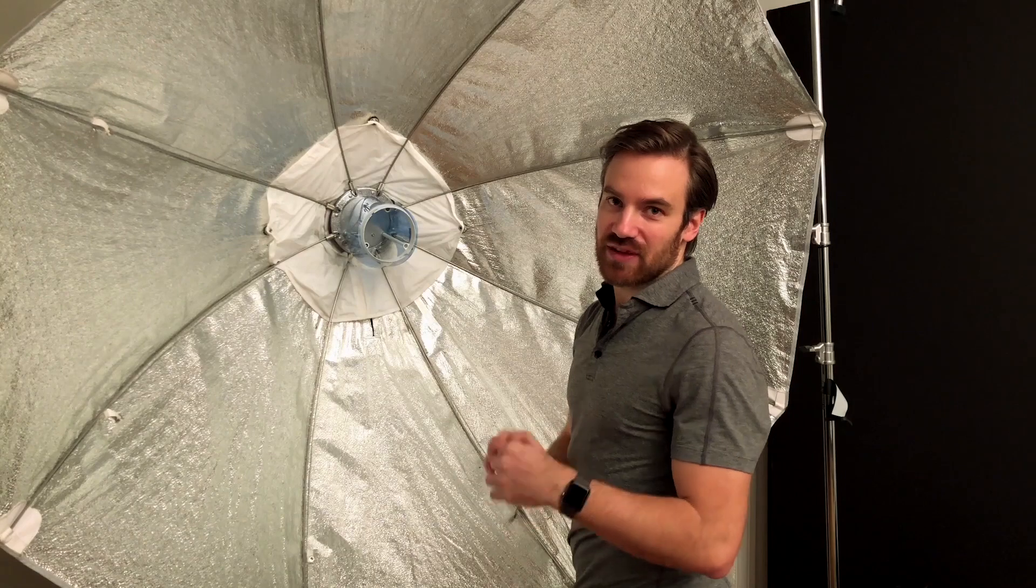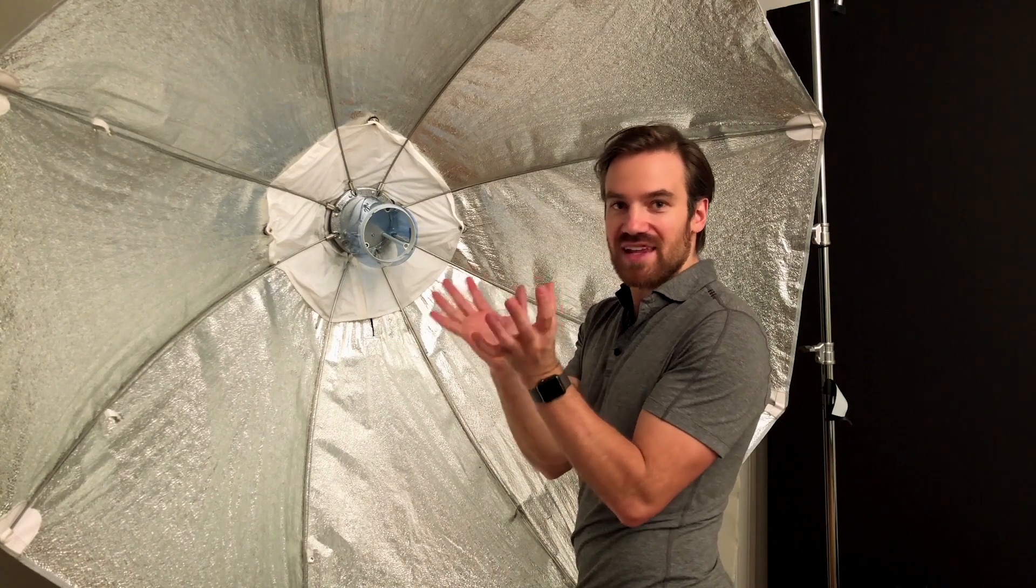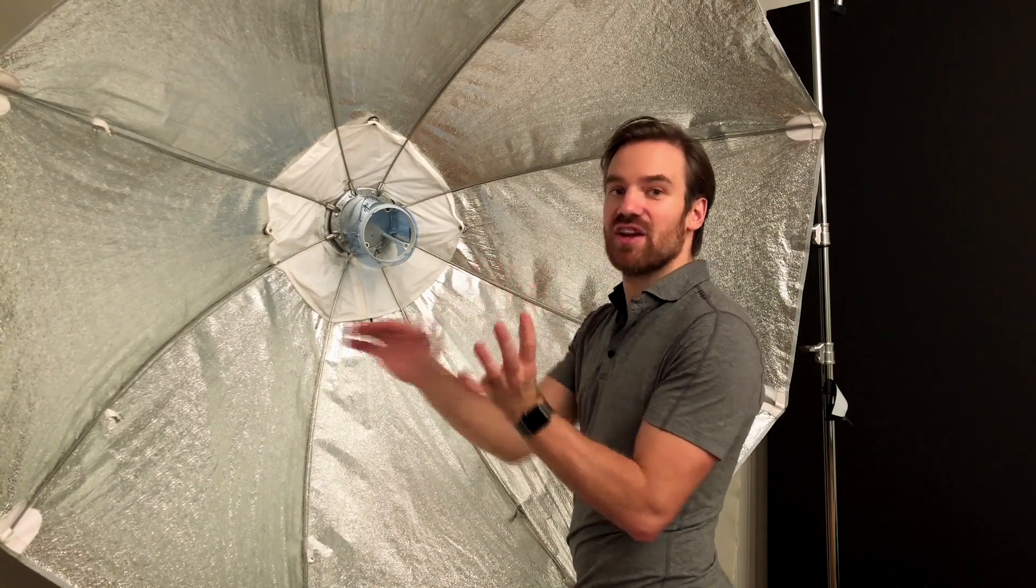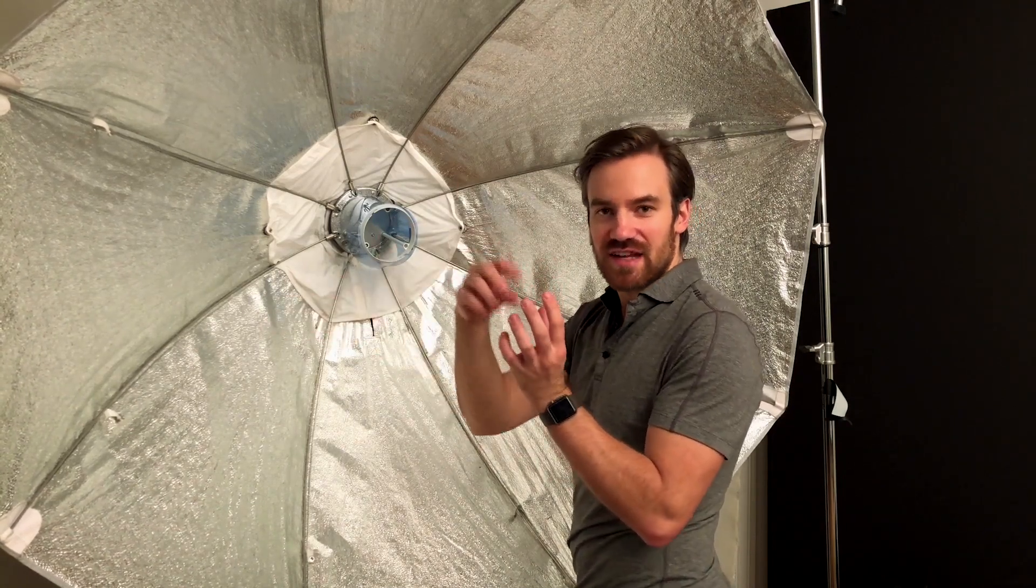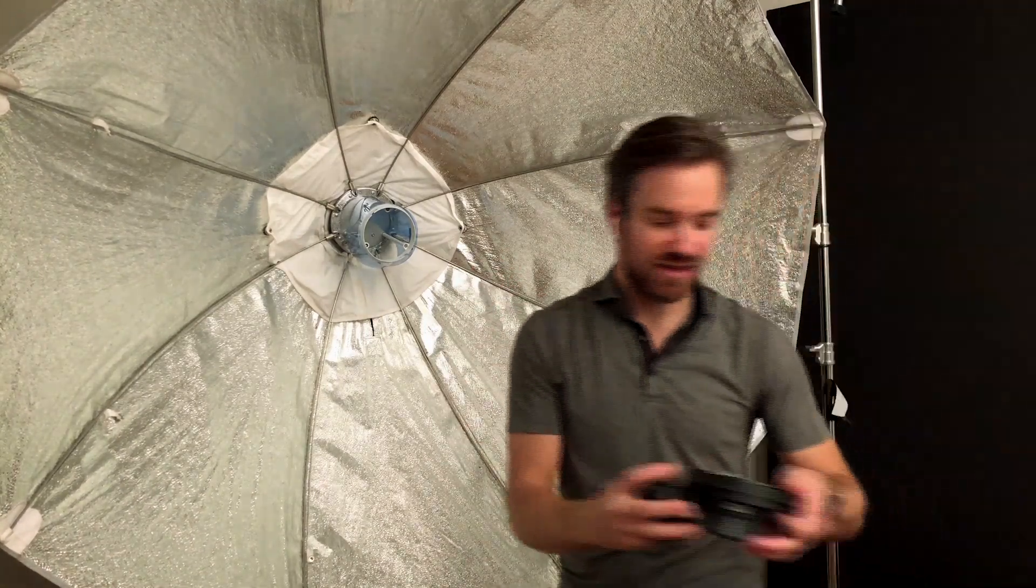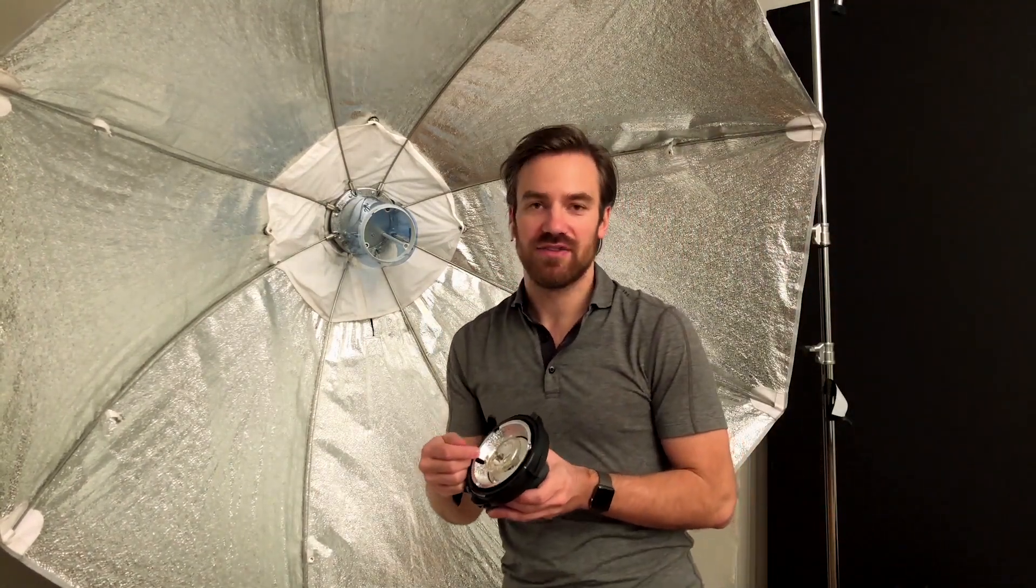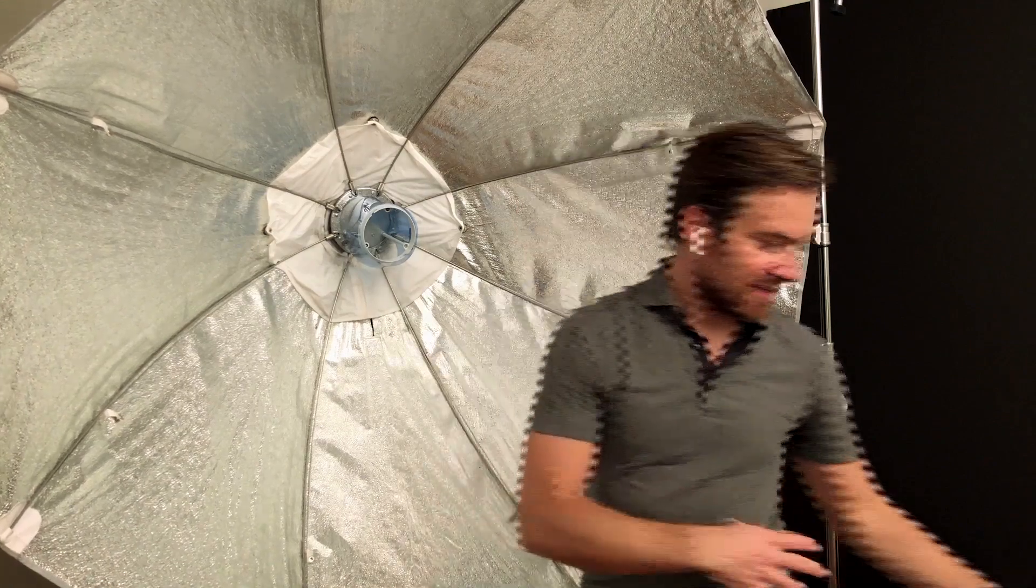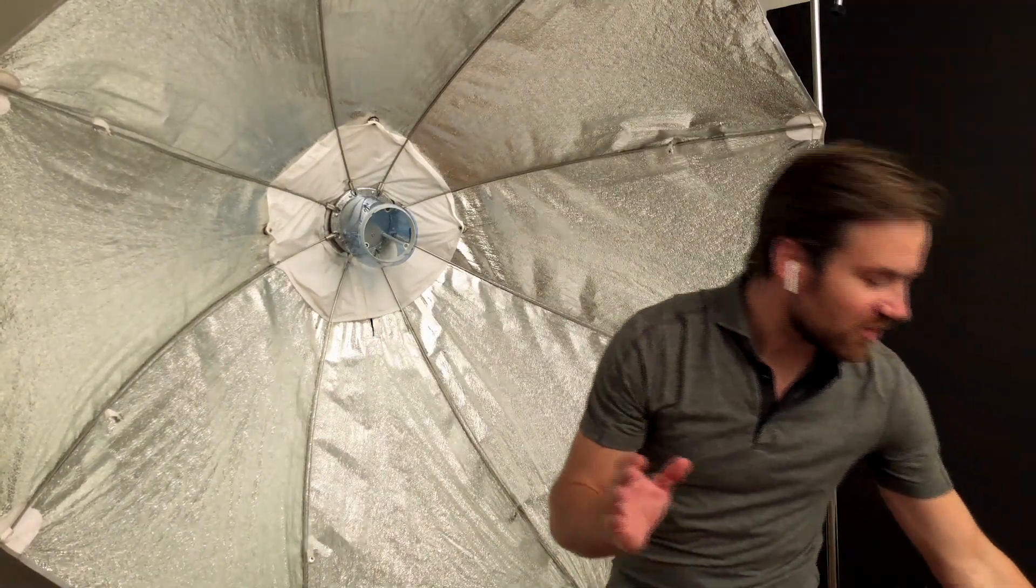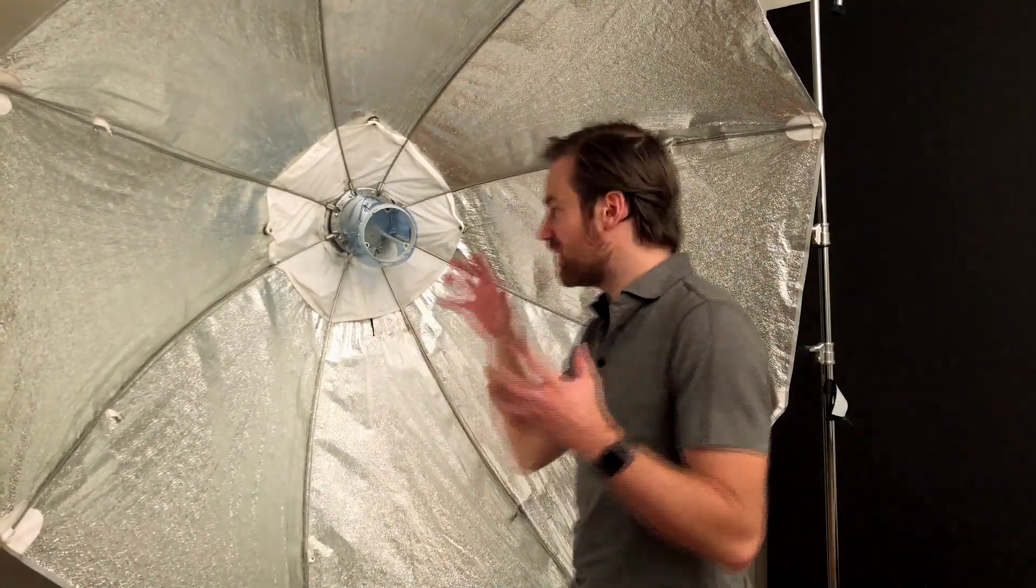So that's the two modifier types I use. I use the inverse umbrella, so you would use that dish on your, so if you have an Alien Bee or something, make sure you have a dish so that your gels aren't touching. You don't want them to be touching the bulb part because they're going to melt and it's going to explode all over you. You don't want that.